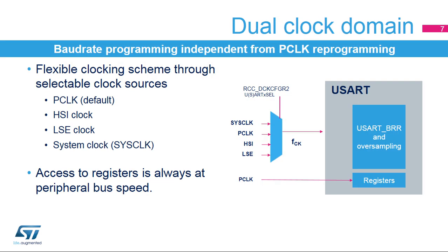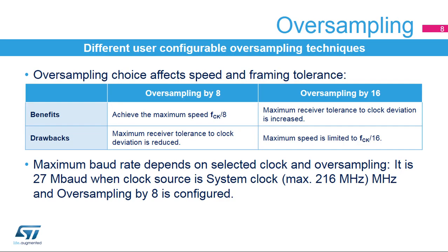The USART has a flexible clocking scheme. Its clock source can be selected in the RCC and can be either the PCLK or peripheral clock, which is the default clock source, or the HSI, LSE, or system clock. The registers are accessed through the APB bus, and the kernel is clocked with FCK, which is independent from the APB clock. The USART receiver implements different user-configurable oversampling techniques for data recovery by discriminating between valid incoming data and noise.